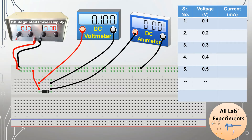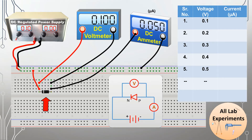To note the characteristics in reverse bias, we switch the orientation of the diode — swapping the P and N sides. We also replace the DC ammeter with one in the microampere range, because in reverse bias the current is quite low. We again vary the applied voltage and record the corresponding current, making a table of these values.